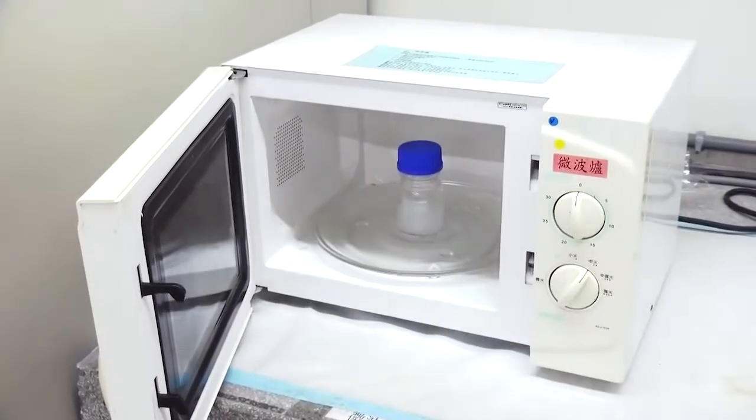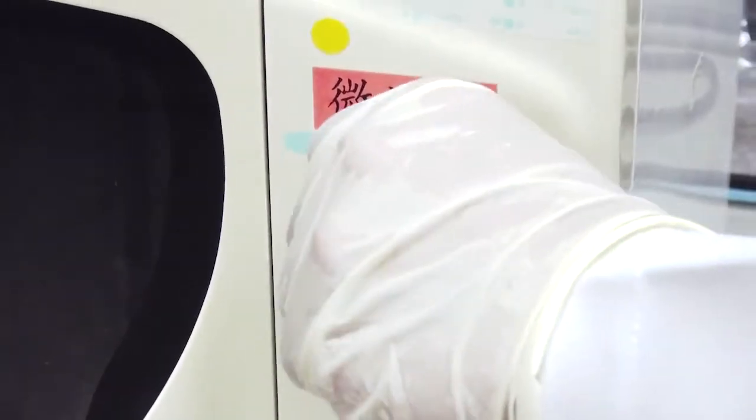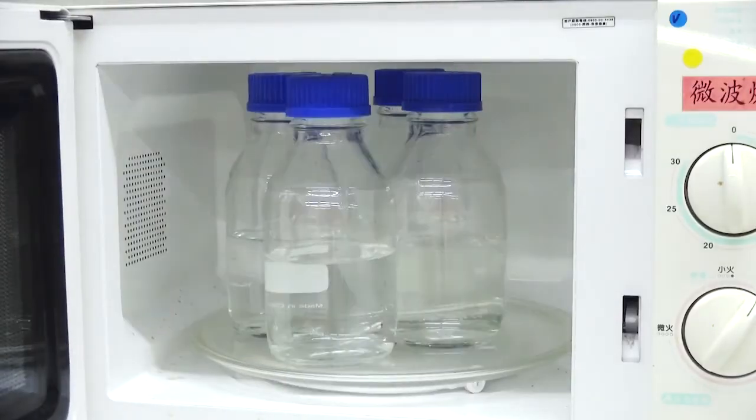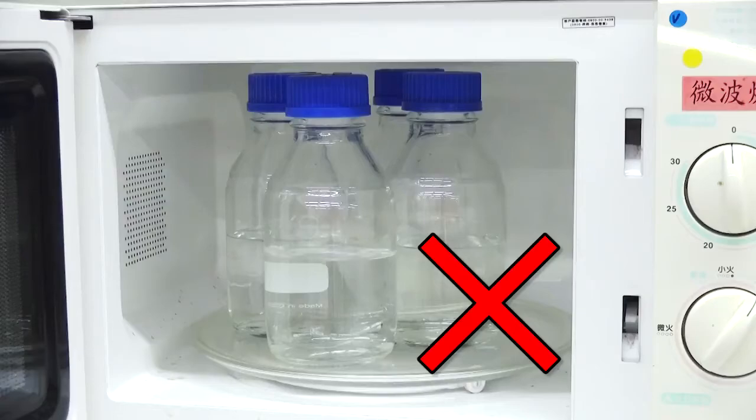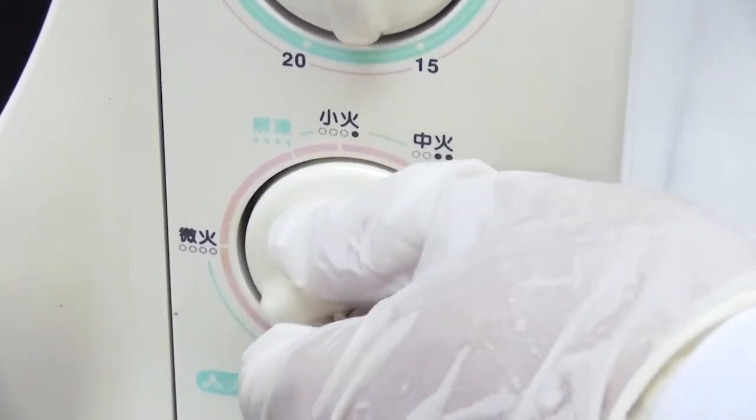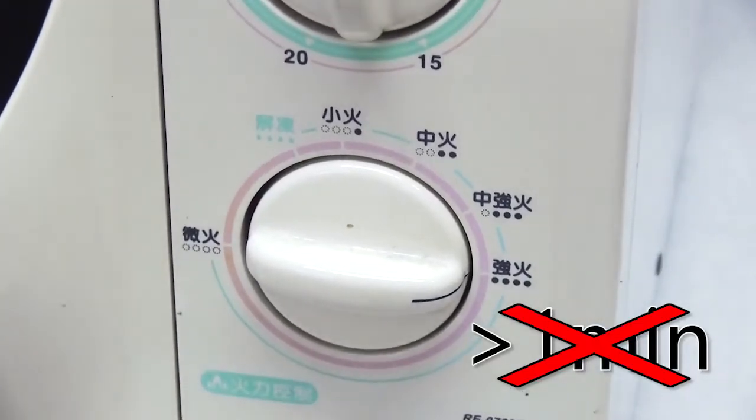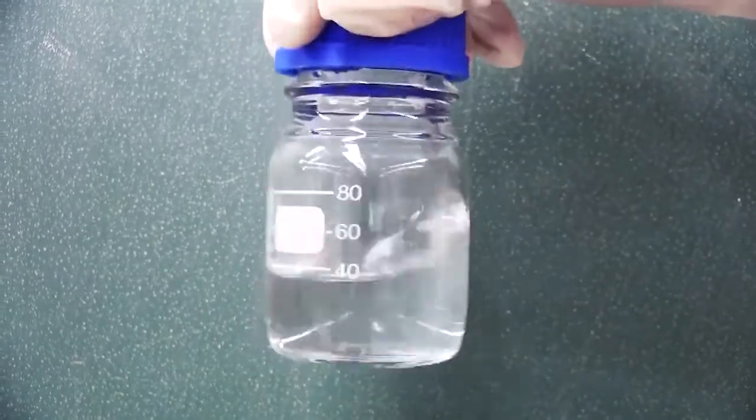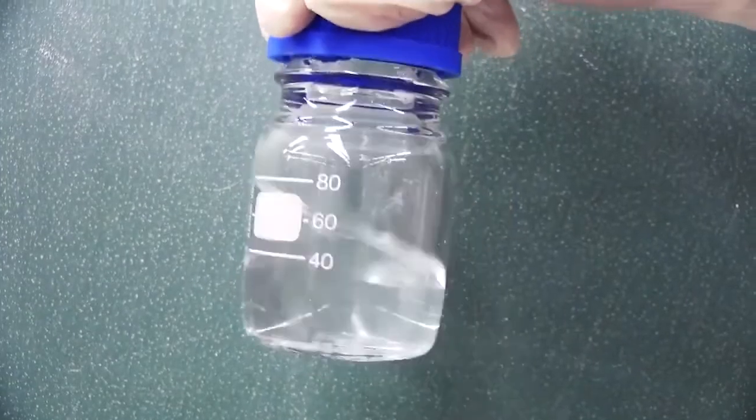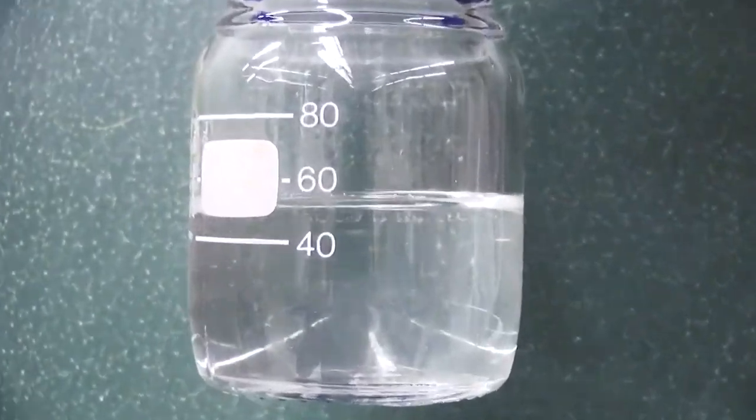Heat the solution in the microwave. Do not microwave more than one bottle at a time to avoid uneven heating. Do not microwave the solution in increments longer than one minute at the highest power setting to avoid overheating. Check if the solution becomes completely clear after microwaving. If not, microwave until the solution is completely clear.